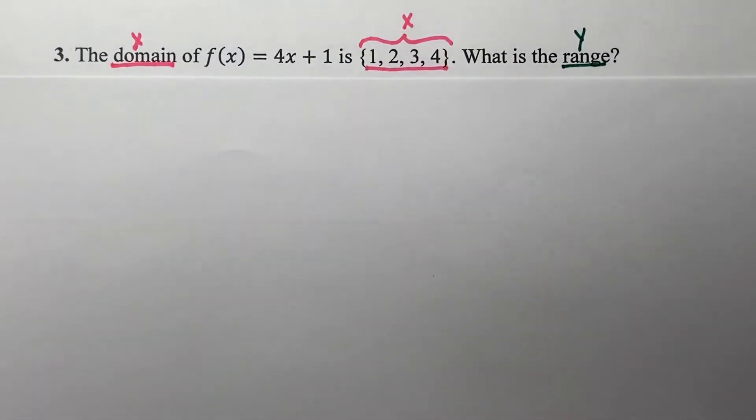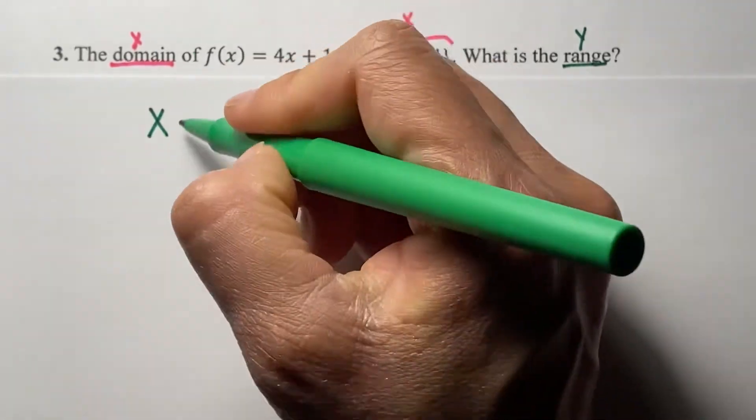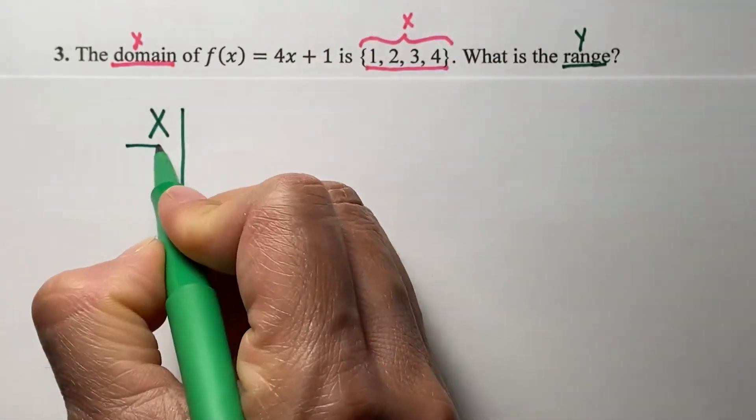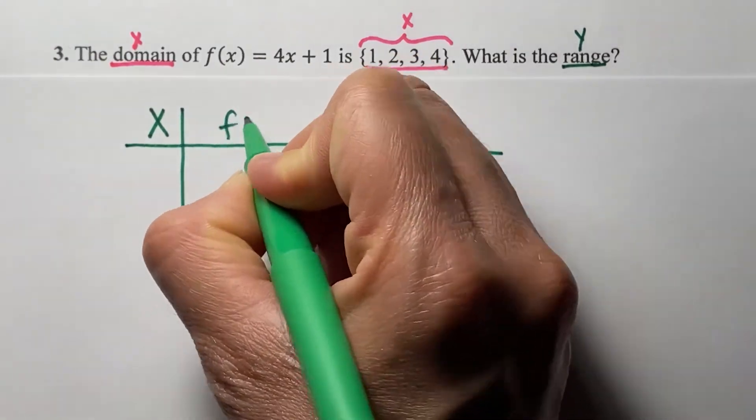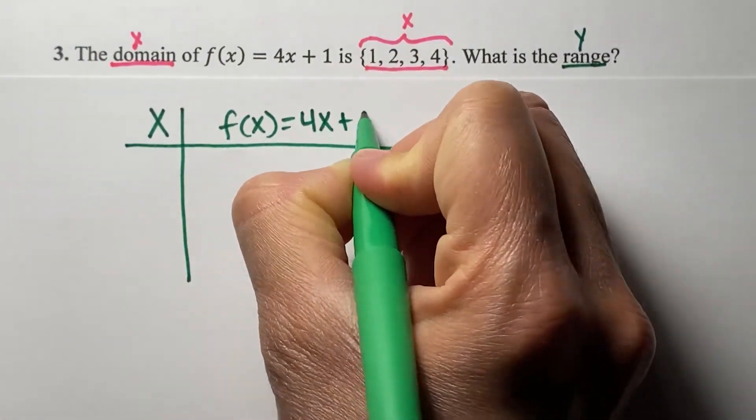To do that, we can set up a table. Our x values, our process which is our function f(x) = 4x + 1.